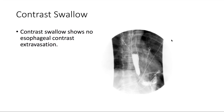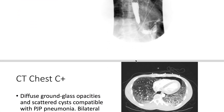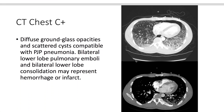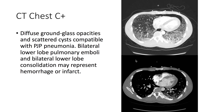Taking a look at the contrast swallow study, we note that there's no extravasation of contrast from the esophagus. Taking a look at the CT of the chest with contrast, we note that there are diffuse bilateral ground-glass opacities and scattered cysts compatible with PJP pneumonia.